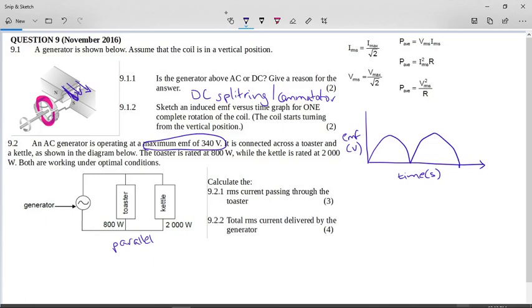Both are working under optimal conditions. So if they are working under optimal conditions, they are producing the power here of 2000 watts for the kettle and 800 watts for the toaster, and they are operating at the correct voltage to produce this.